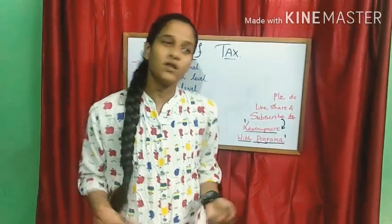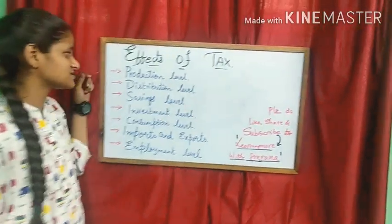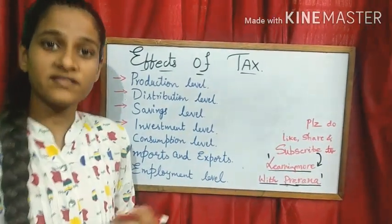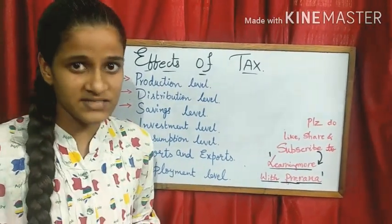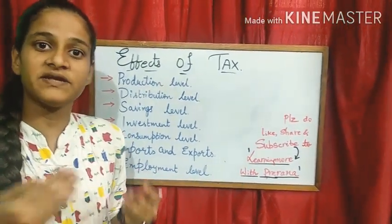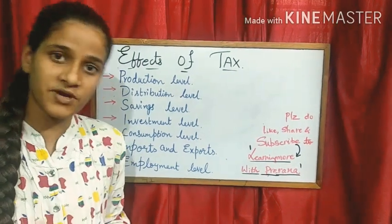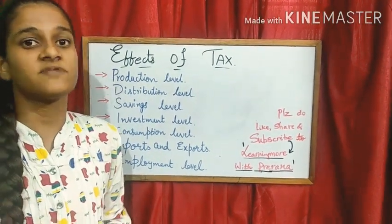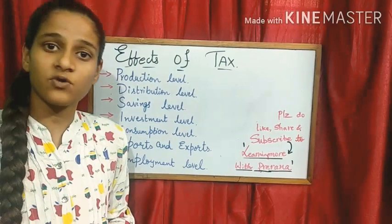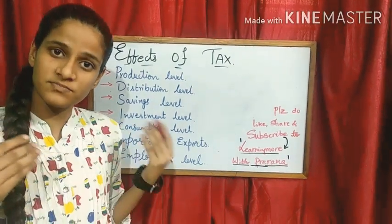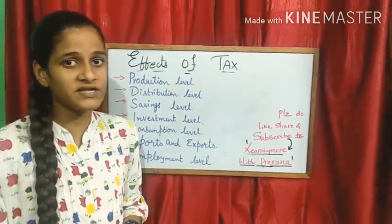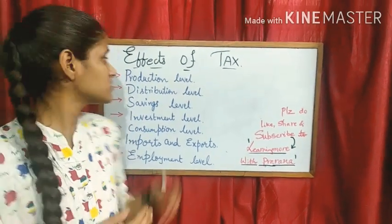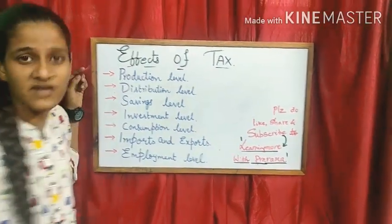Let us see the effects of tax. First, production level. When the tax rate is increased, there will be a decrease in the production rate because the raw materials will also have a higher tax rate. So the tax rate on raw materials is increased, and the production level will decrease.